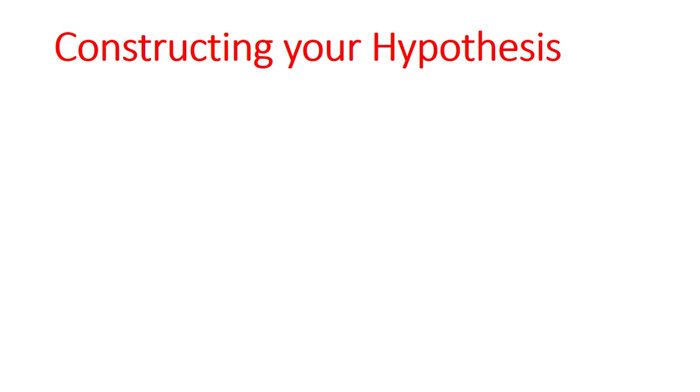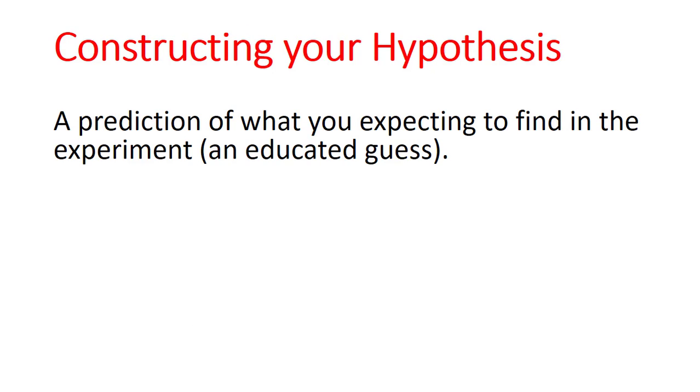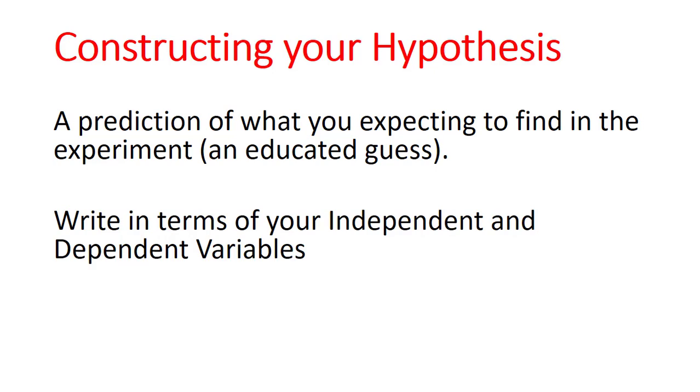When we're constructing our hypothesis, we need to make a prediction of what we're expecting to find in the experiment. And it's not just a guess what we might find, but an educated guess, based on our knowledge, based on our previous experiments or things that we know. We need to write it in terms of both our independent and dependent variables. And as we've said, it needs to be something that can be tested.